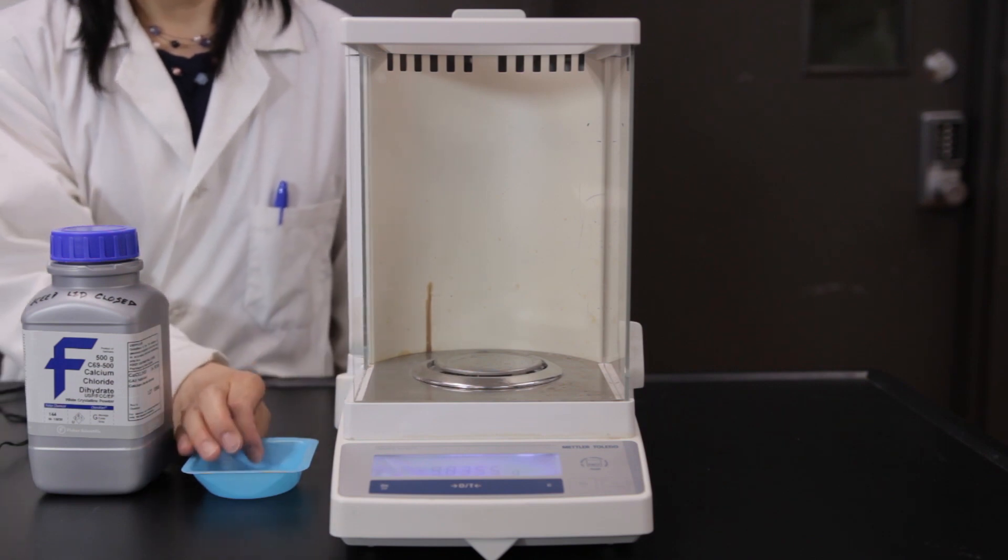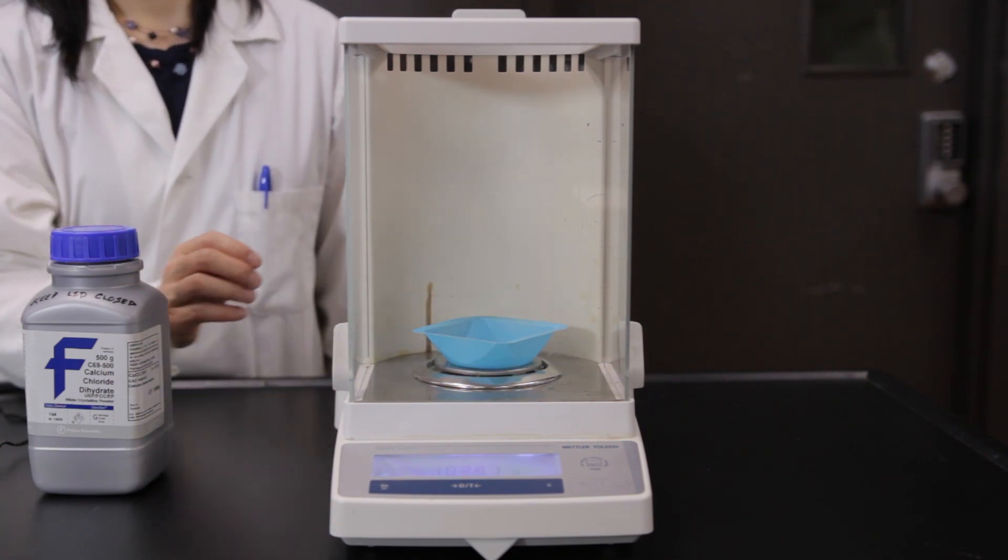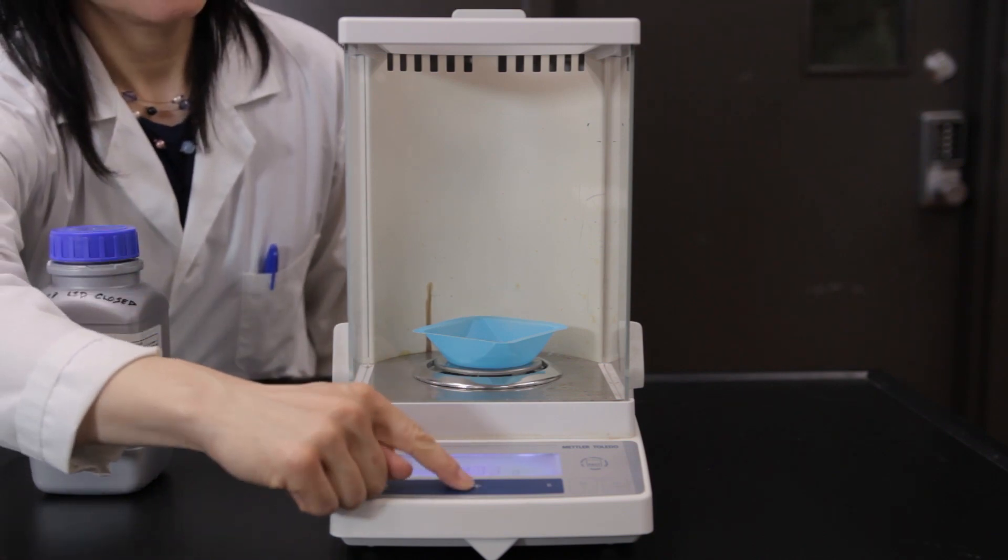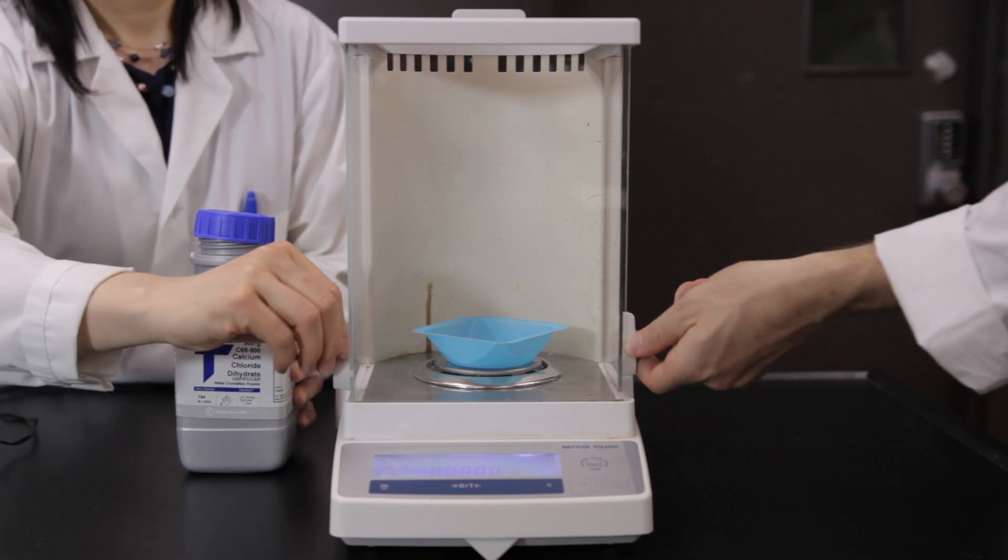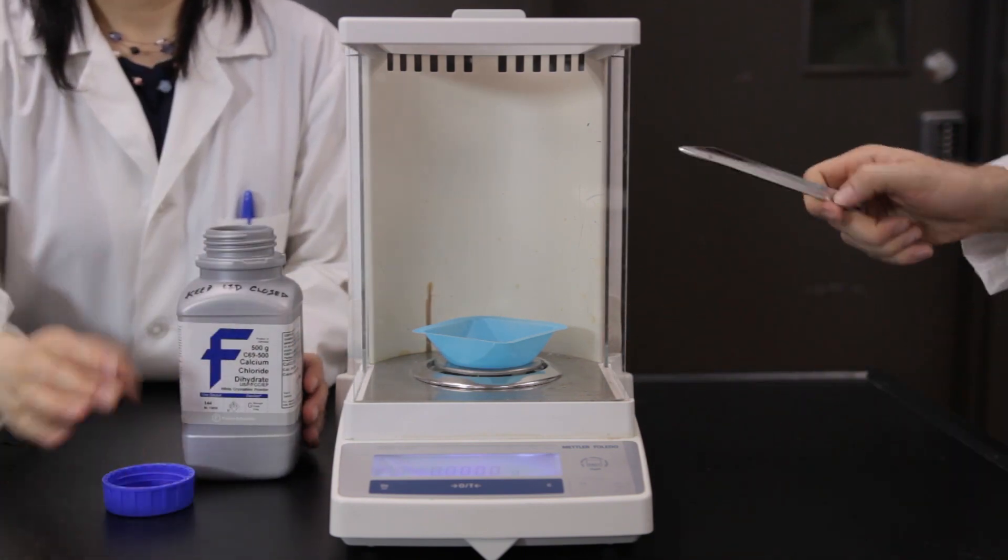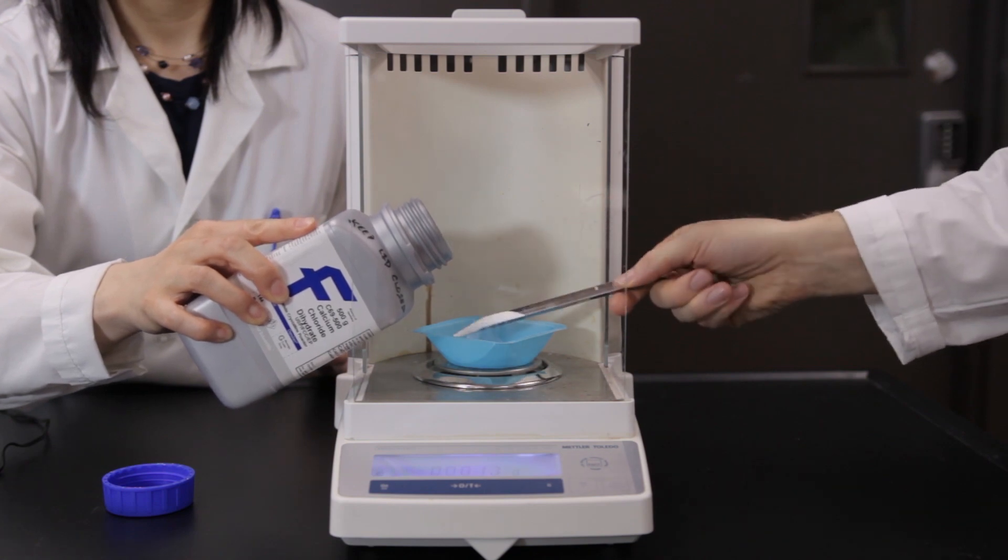Place a weighing dish on a balance and tare it. Weigh approximately 4 grams of calcium chloride dihydrate and record the exact mass.